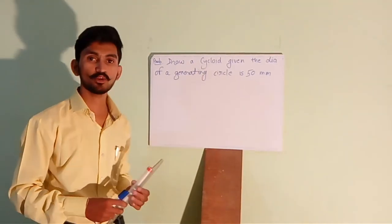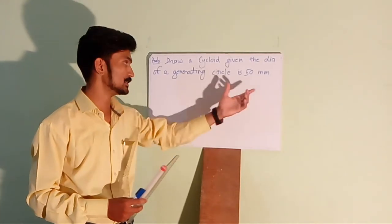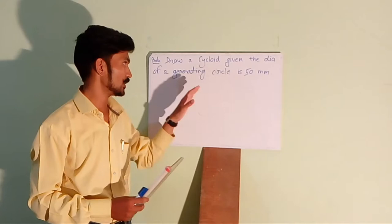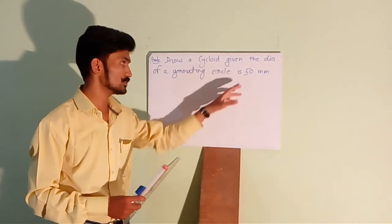For drawing a cycloid, one data is sufficient which is the diameter or the radius of the generating circle. In this question, they have provided us the diameter of the generating circle which is 50mm.